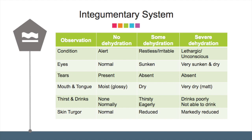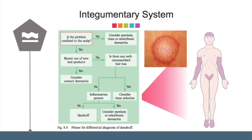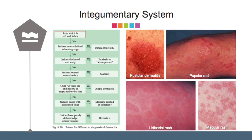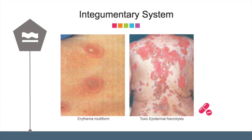The next system is the integumentary system. This is the easiest system to investigate hydration status; the tongue will be one of the common observations done. Poor hydration may increase the risk for drug side or adverse effects. This is an example of an algorithm to assess dandruff. Rash is a common skin or cutaneous reaction due to medication, and pharmacists should master the rash assessment skill. Look at these two photos — can you suggest possible medications that can cause these reactions?